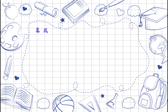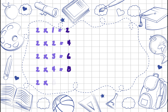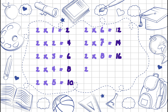Two ones are two, two twos are four, two threes are six, two fours are eight, two fives are ten, two sixes are twelve, two sevens are fourteen, two eights are sixteen, two nines are eighteen, two tens are twenty.